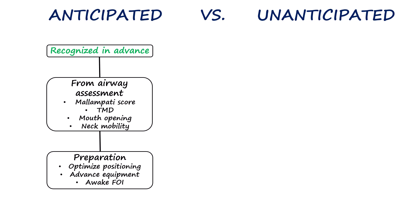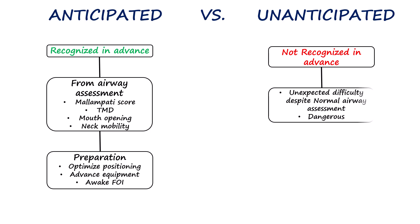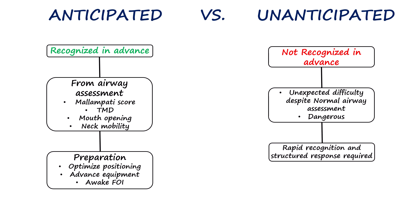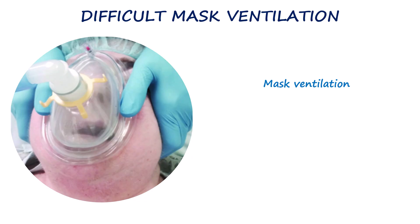An unanticipated difficult airway arises unexpectedly during airway management despite normal assessment findings. This is more dangerous because it leaves the team unprepared and increases the risk of hypoxia, making rapid recognition and a structured backup plan essential. Difficult airway can occur at various stages, starting from mask ventilation, supraglottic airway insertion, laryngoscopy, and intubation, to front-of-neck access.